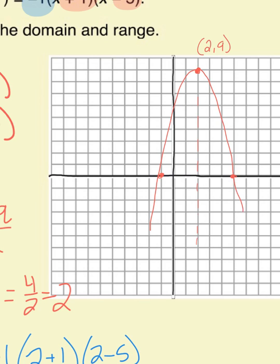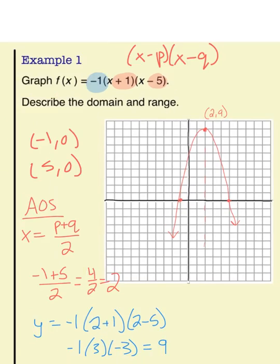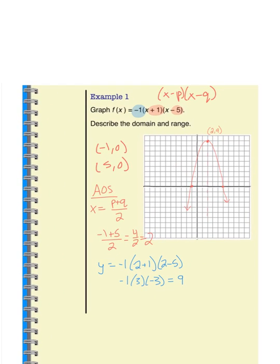Once I know my intercepts and my vertex, I can draw the parabola. The function is graphed. We still need to find the domain and range. The domain is all real numbers, and the range is y ≤ 9.